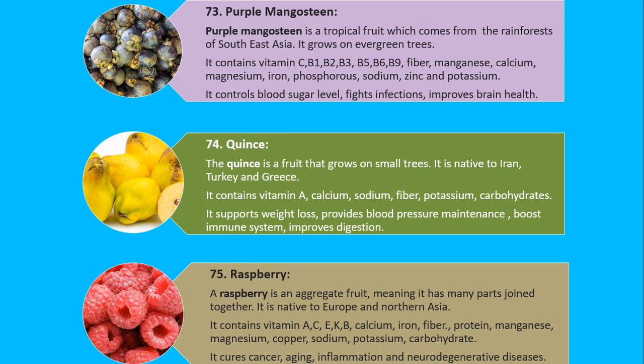Number 75. Raspberry. A raspberry is an aggregate fruit, meaning it has many parts joined together. It is native to Europe and Northern Asia. It contains vitamin A, C, E, K, B, calcium, iron, fiber, protein, manganese, magnesium, copper, sodium, potassium and carbohydrate. It cures cancer, aging, inflammation and neurodegenerative diseases.